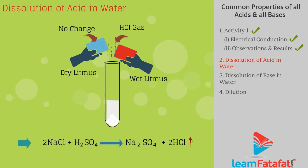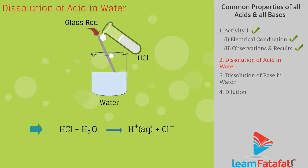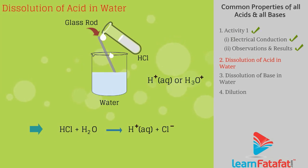the wet blue litmus changes to red, because dry HCl gas forms ions when mixed with water. Hence, it shows acidic properties. When acids are mixed with water, hydrogen ions are produced. As hydrogen ions cannot exist alone, they are shown as H+ or H3O+.